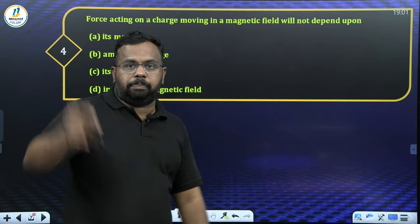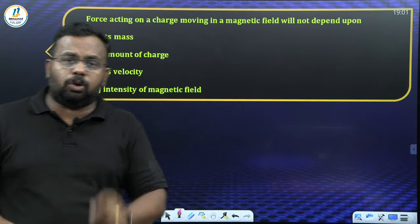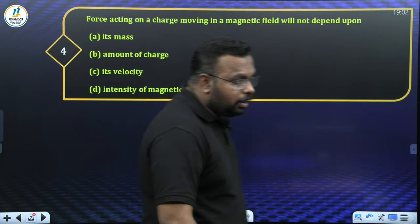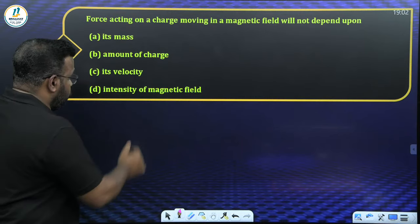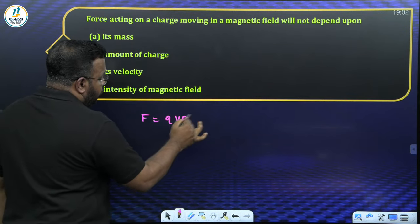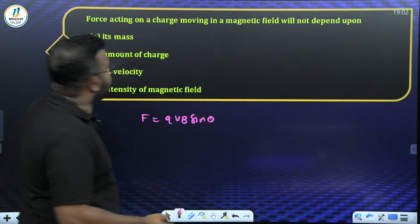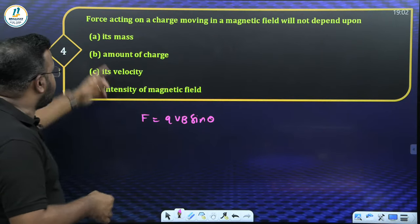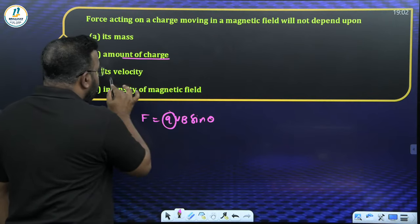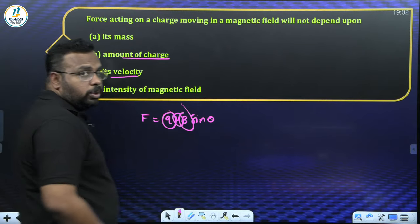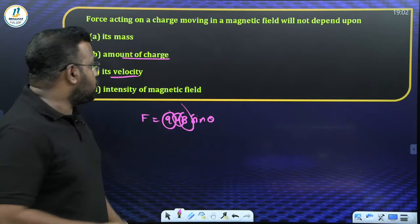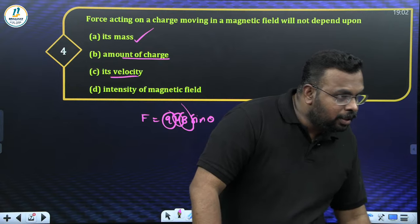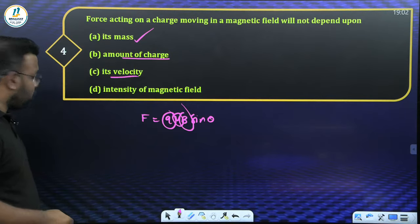Question 4: Force acting on a charged particle moving in a magnetic field will NOT depend upon — again based on Lorentz force: F = qvB sinθ. Mass is not in the formula, so the force is independent of mass. Options charge, velocity, and magnetic field intensity are all present in the formula. Answer: mass of the particle.